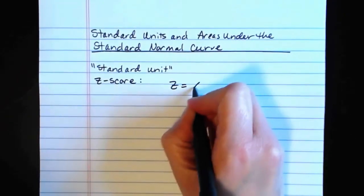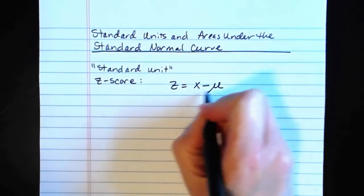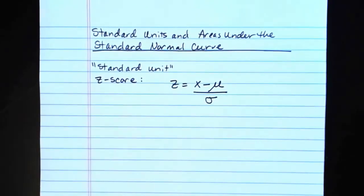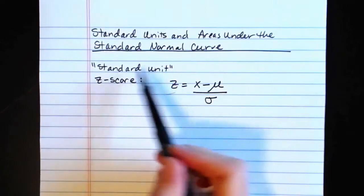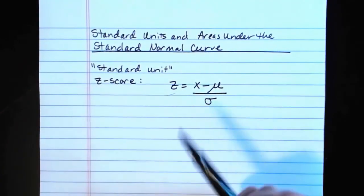Z is equal to X minus mu over sigma. And this is something that would only get utilized with a normal curve. Z is just what we call the standard unit. We label it with the letter Z.